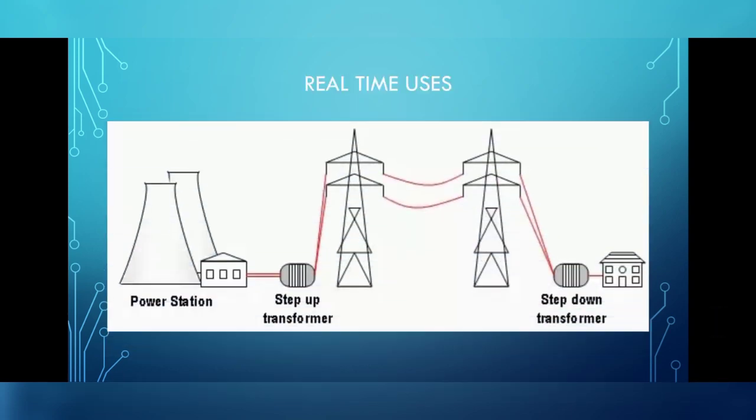Real-time uses of a transformer: the large-scale transmission and distribution of electrical energy over long distances is done with the use of the transformer. The voltage output from the power station is stepped up using a step-up transformer, and then this voltage is consequently distributed to the substations where it gets stepped down consequently. And finally, before reaching our home, it gets stepped down to 240 volts.